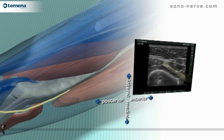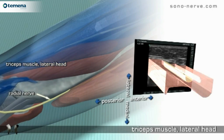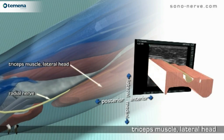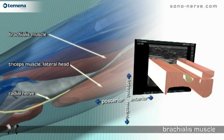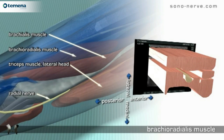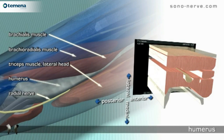Anatomy: radial nerve, lateral head of the triceps muscle, brachialis and brachioradialis muscle, humerus.